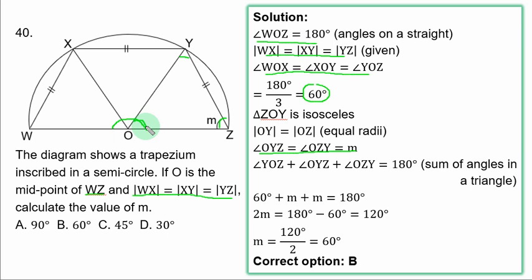So, in triangle ZOY, if you add the three angles, the sum is equal to 180 degrees. So, you have 60° + m + m = 180°. So, 2m = 180 - 60°. And that is 120 degrees. To get m divided by 2, m is equal to 60 degrees.